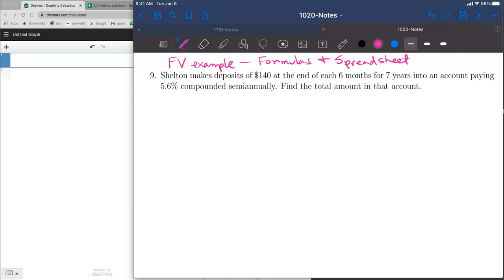In this example, we look at a future value problem from the perspective of formulas and spreadsheets. When talking about the formulas in this problem, we need to identify which type we're looking at. We need to determine if this is a compound interest problem (a.k.a. a lump sum problem), an ordinary annuity problem, or a loan problem. We'll figure that out as we read.